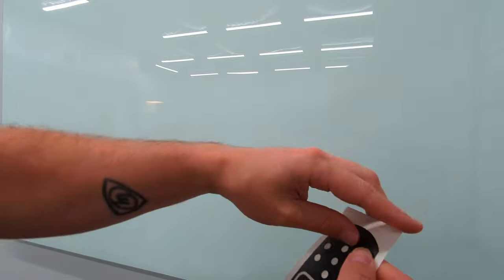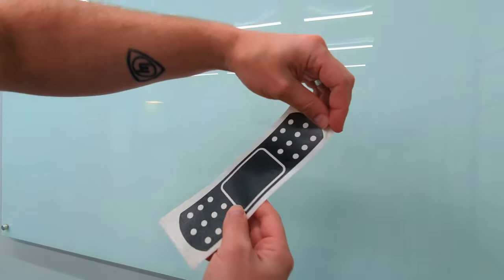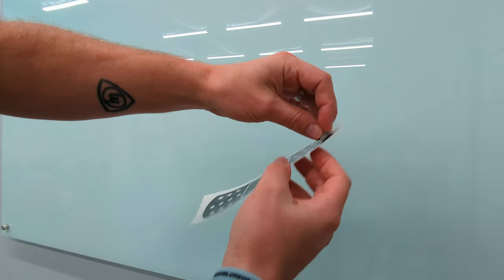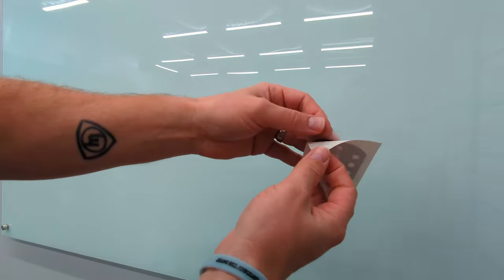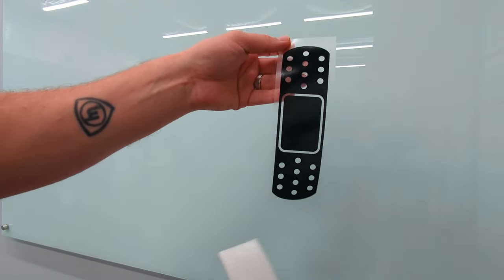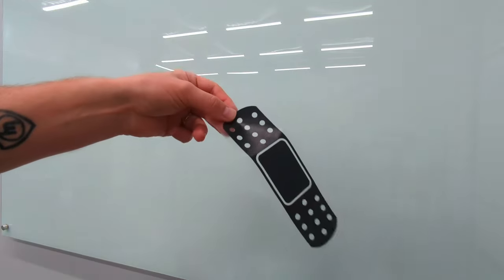You'll take this and usually start at one of the edges. Sorry, I'll try to keep it in frame as best as possible. You're going to peel back. Sometimes I'll flip it over like this and peel the white backing paper off, and that just leaves the backside of the decal.